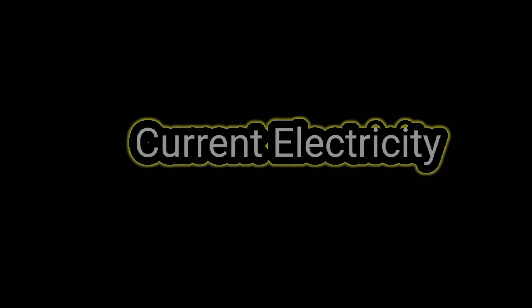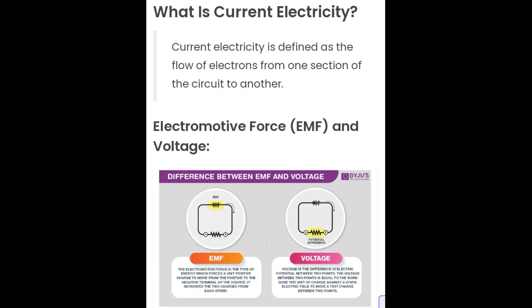Hello guys, welcome back to our channel. Today, our topic of video is current electricity. What is current electricity? Current electricity is defined as the flow of electrons from one section of circuit to another.